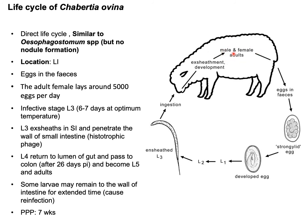The adult parasite is found in the large intestine — that is the sigmoid colon. Adult females lay eggs which pass into the environment through feces. In the environment, the eggs develop to L1, L2, and L3. L3 is the infective stage. Development from egg to L3 takes around six to seven days depending on optimal humidity and temperature. The final host is infected after consuming contaminated food and water containing L3 larvae.